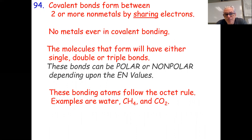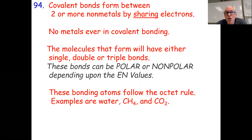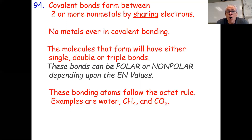Covalent bonds are when two or more non-metals share their electrons. There are no metals and no ions ever. The molecules that form are going to have either a single, double, or triple bond — sharing one pair, two pairs, or three pairs of electrons. Covalent bonds can be polar or non-polar depending on whether they share those electrons evenly, and we measure that with the electronegativity difference. Every atom has an electronegativity value on table S. If they're the same numbers, like in O₂ — both atoms of oxygen have a 3.4 electronegativity.